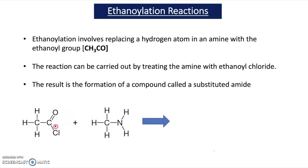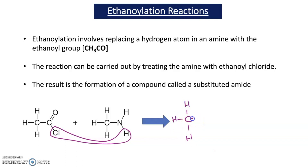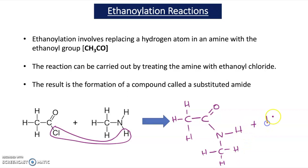Ethanoylation reactions involve replacing a hydrogen atom in an amine with an ethanoyl group — a CH3 bonded to a C double bond O. The reaction is carried out by treating the amine with ethanoyl chloride. So here we have CH3 C double bond O-Cl, ethanoyl chloride, and methylamine, CH3NH2. A hydrogen from the amine joins with the Cl from ethanoyl chloride to make HCl, and a substituted amide is formed. This substituted amide is a CH3 attached to a C double bond O, then a bond to a nitrogen with a hydrogen and a CH3, and it's called N-methyl ethanamide.